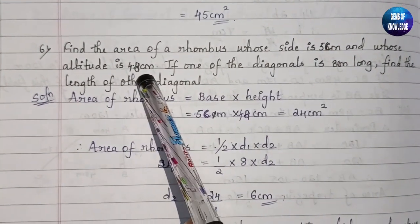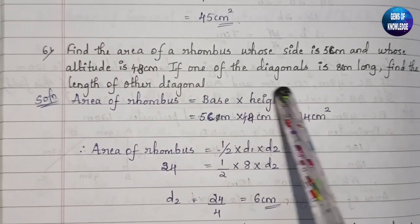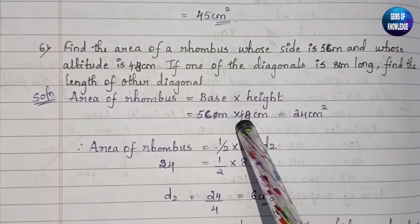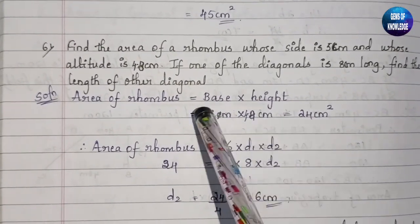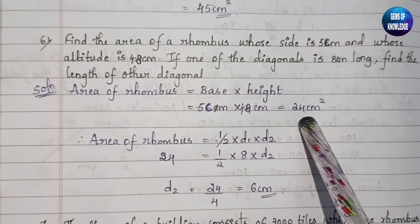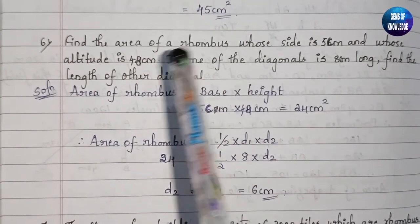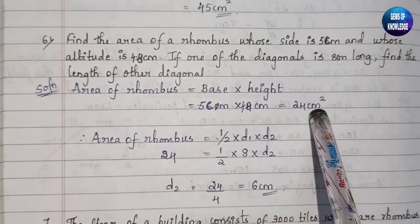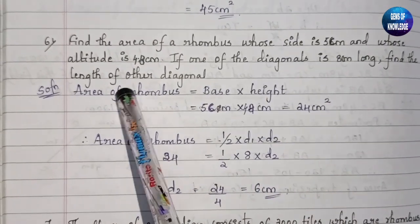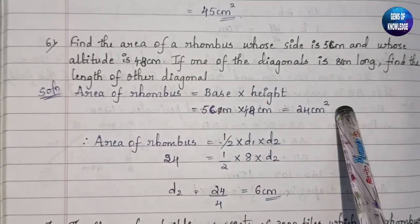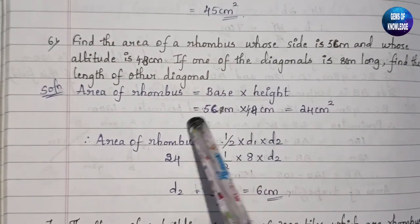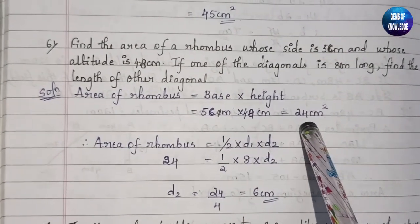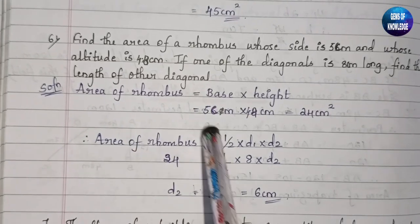The formula we use first is: Area of rhombus = base into height. From this question, base is 5 cm and height is 4.8 cm, so base into height equals 5 into 4.8, which gives us 24 centimeter square. Area is in square units.